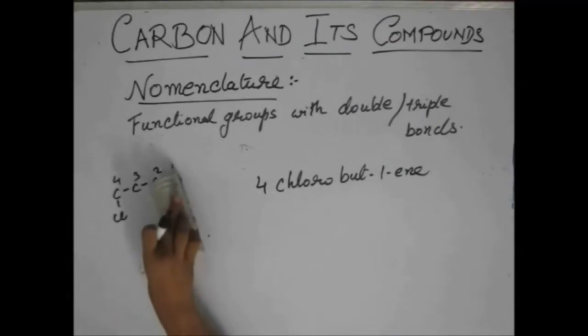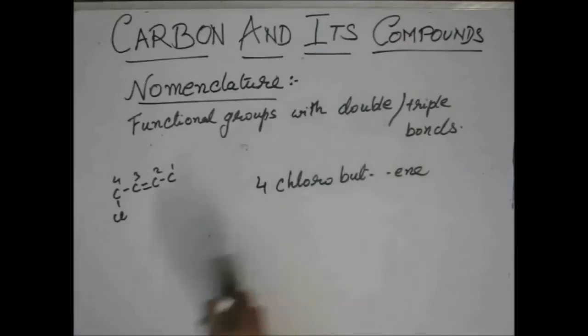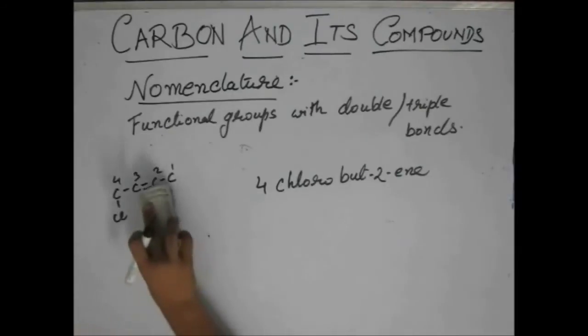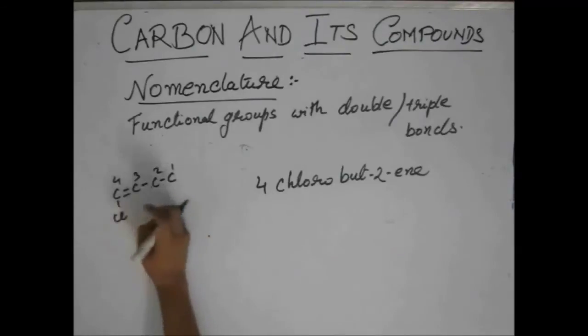If the double bond would have been here, it would have been 4-chloro-bute-2-ine. If the double bond would have been here, then we can no longer name this chain from this side, because the double bond has come nearer to this side.